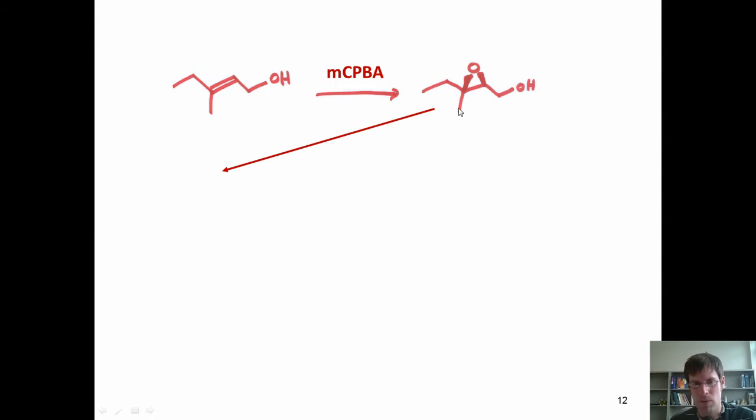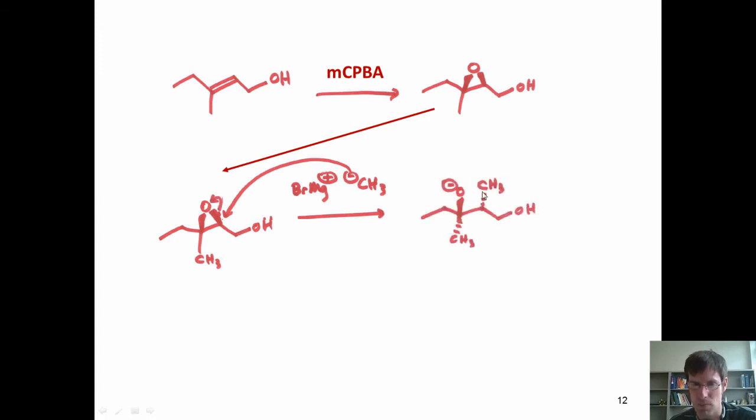If I have this compound right here, which I've redrawn over here, and I treat it with a Grignard reagent, the Grignard reagent effectively acts just like a negatively charged carbon, and the negatively charged carbon is going to come in and attack. Which of these two positions is it going to attack? It's going to attack the less sterically hindered one, which is the one to the right. So, as this comes in, electrons thrust up onto the oxygen to give this intermediate, and then I protonate that in the quench to give me my final product.